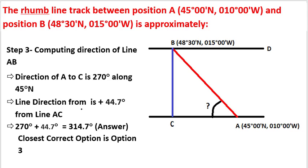Step 3: computing the direction of line AB. Direction of AC is 270 degrees along 45 degrees north. Line AB is 44.7 degrees more than line AC. So we get 270 plus 44.7 degrees, equal to 314.7 degrees, and the closest option is 315 degrees, which is option C.